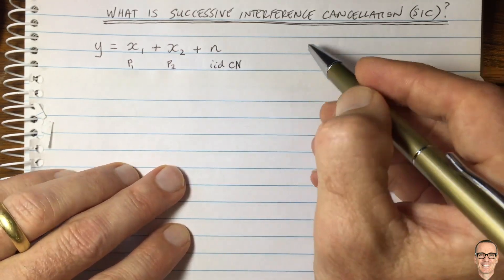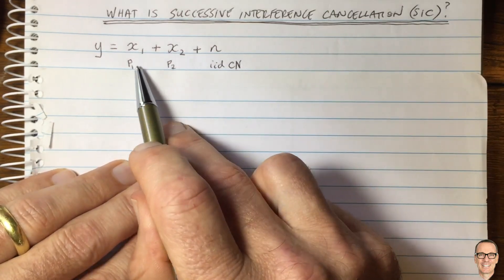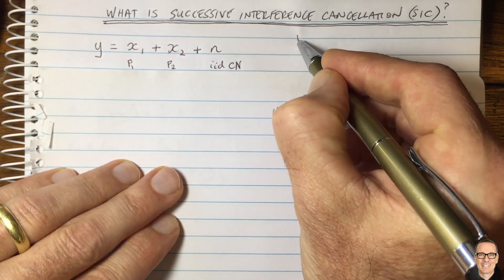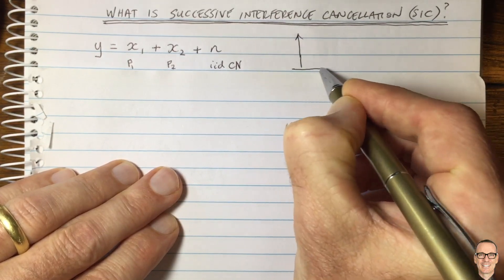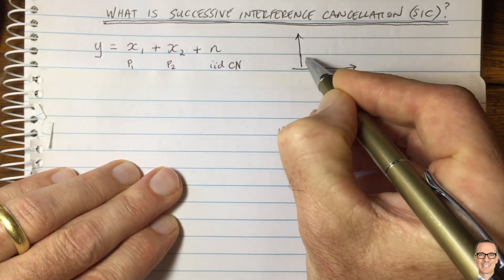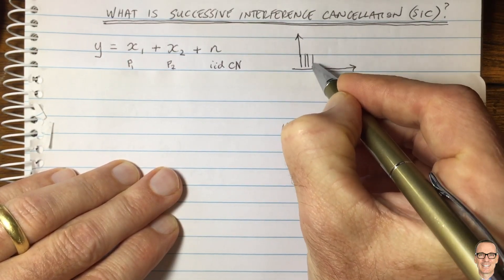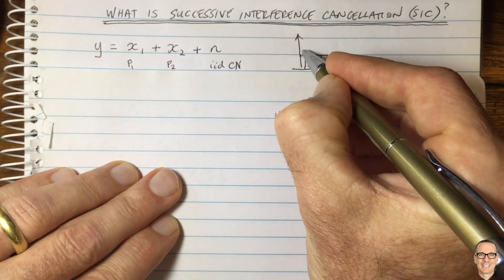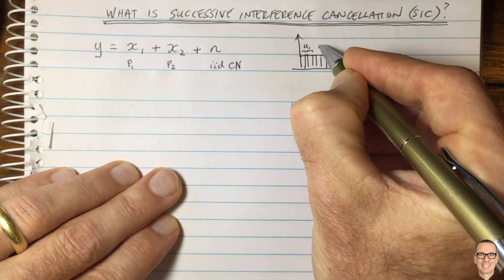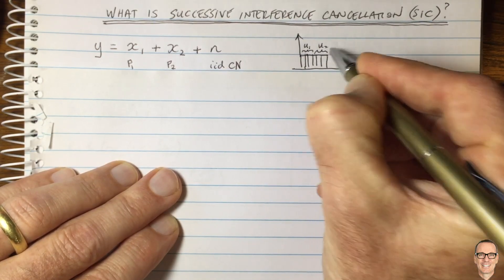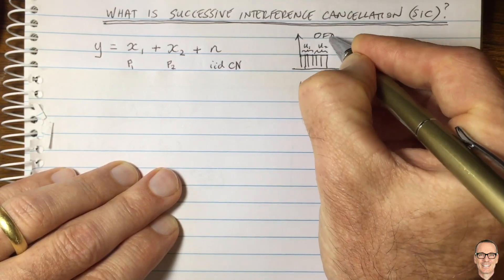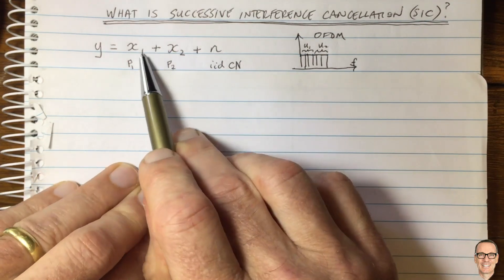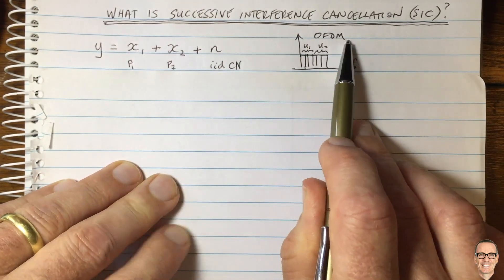One way to do that is to divide up the resources in an orthogonal way. For example, we could do OFDM — in the frequency domain we could divide the frequency into sub-channels and allocate a certain number of sub-channels to user 1 and a certain number to user 2. This is one orthogonal way to get two signals to a receiver.